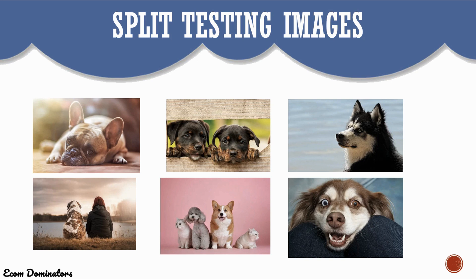For example, say I'm selling dog-related clothing and I want to target people that like dogs. I have six images here that I found on Pixabay, and I want to create a separate ad for each and every single one of these photos, because I want to figure out which one will respond better and yield me the lowest cost per like. It's very important that we keep our numbers low.